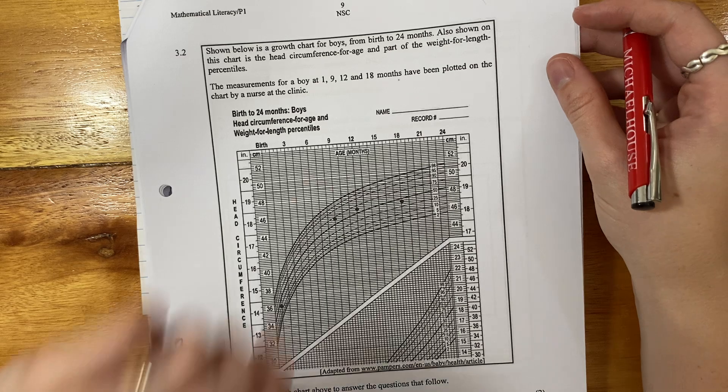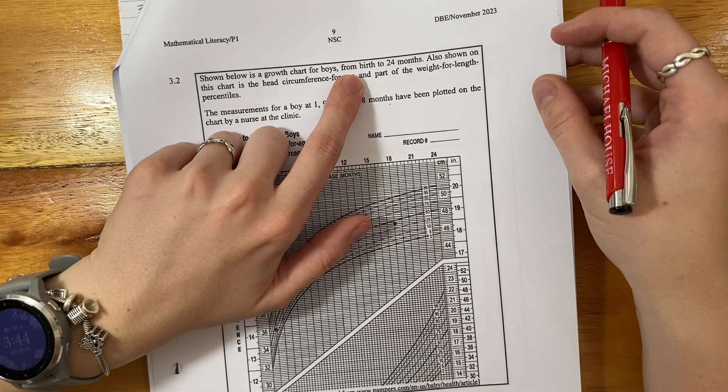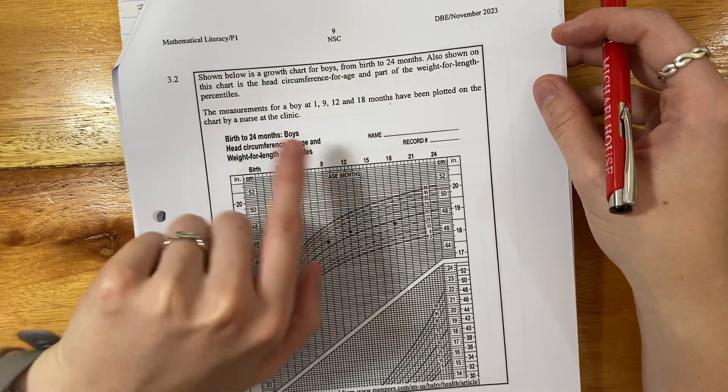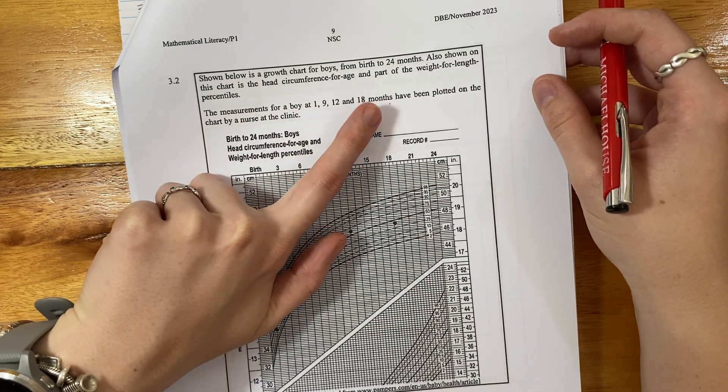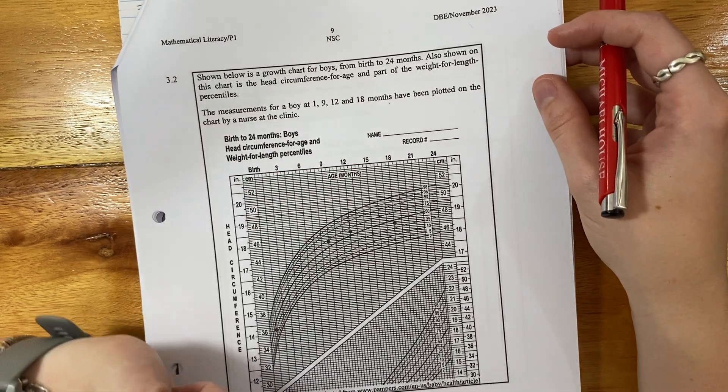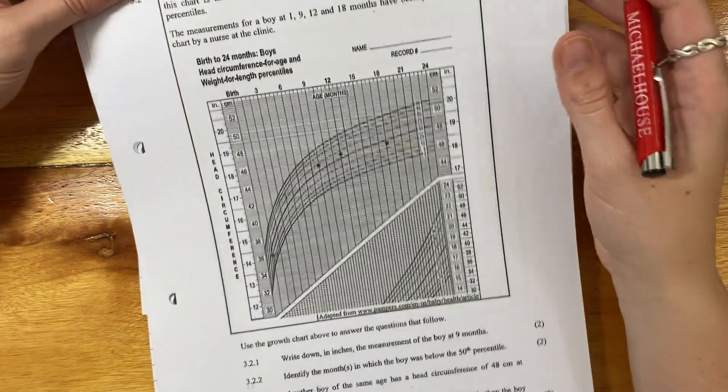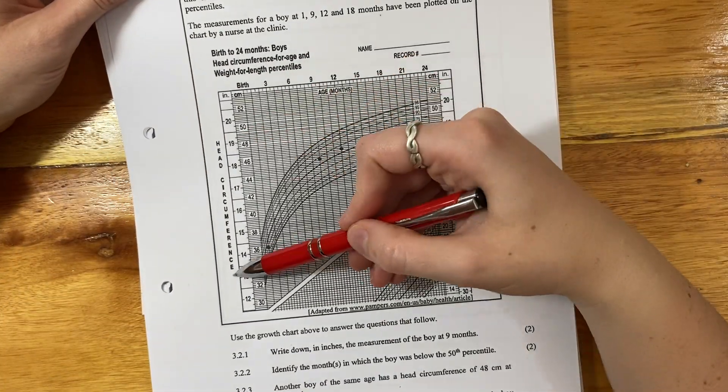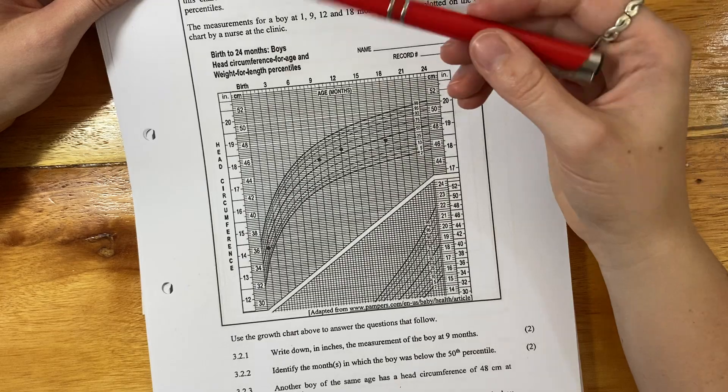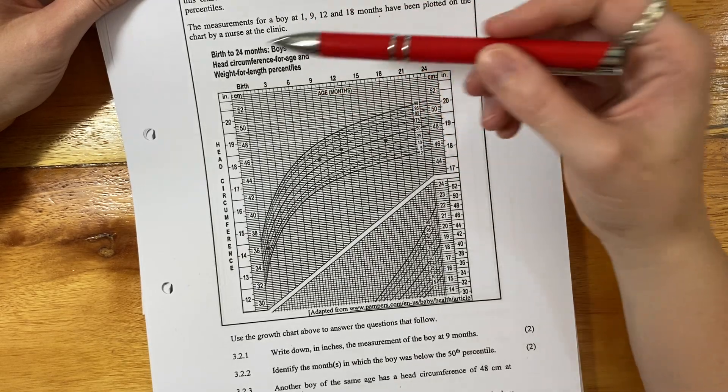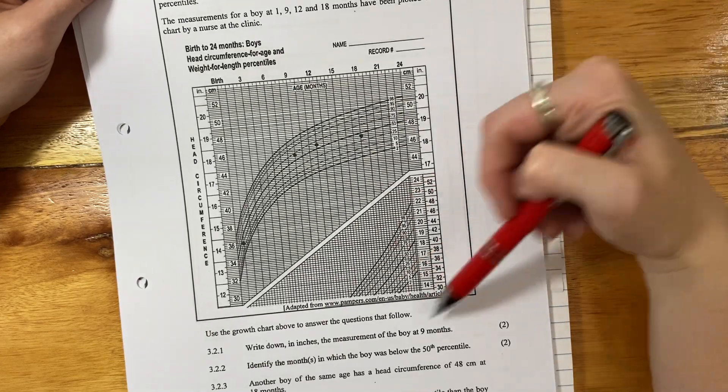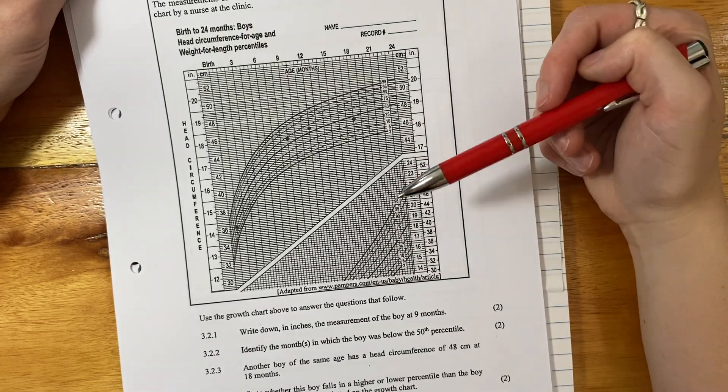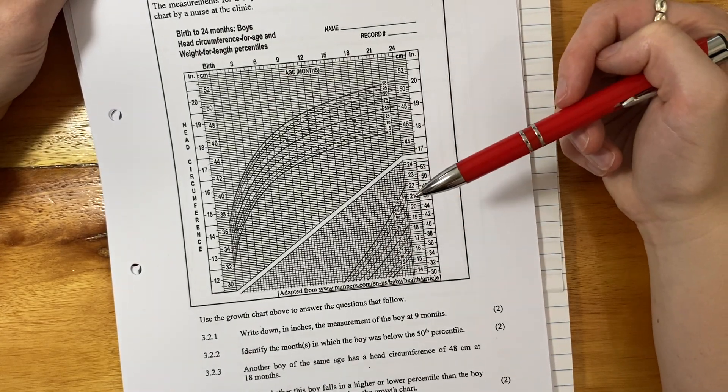Shown below is a growth chart for boys from birth to 24 months. Also shown on this chart is the head circumference for age and part of the wait-for-length percentiles. Okay, so there's a lot going on here. We can see this is clearly labeled head circumference. This is labeled birth. Here it said part of the wait-for-length. So I think this is the wait-for-length, but I don't actually know. We'll see what the questions ask.